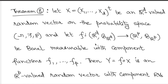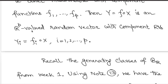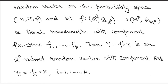You can identify the individual component random variables of Y = f∘X. Since f is R^p valued, it has p many R-valued components f₁ up to f_p, each defined on R^d and taking values in R — these are all Borel measurable components. The i-th component Y_i is given as f_i∘X, where X goes from Ω to R^d and f_i goes from R^d to R, so the composition goes from Ω to R. Thus Y_i are real valued random variables giving p many components of the random vector Y.